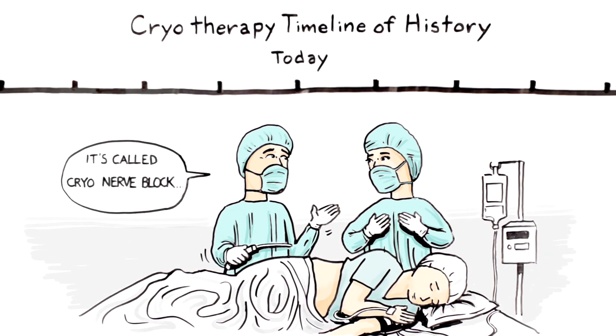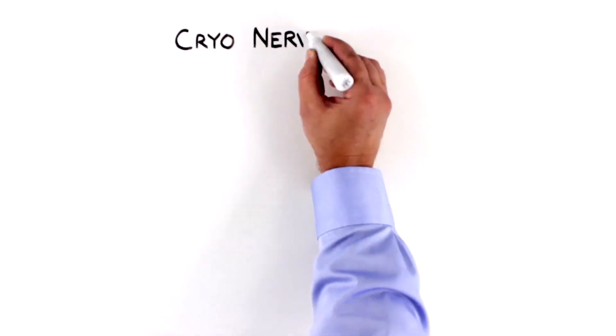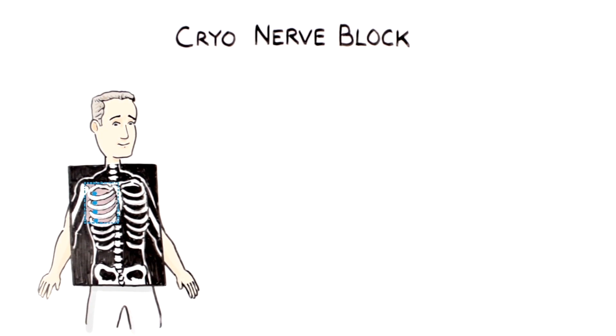It's called cryo-nerve block, and it's a popular way to manage pain. Cryo-nerve block involves freezing the intercostal nerves located in your chest underneath each rib.